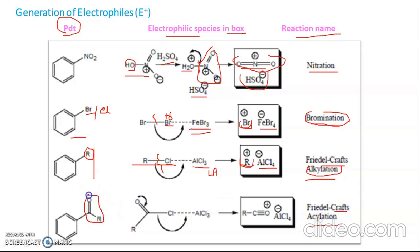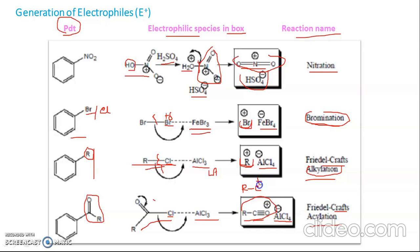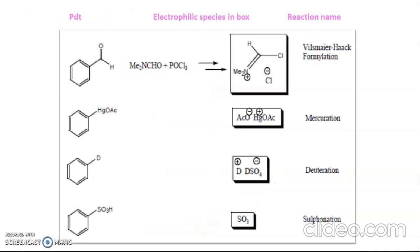In Friedel-Crafts acylation, an acyl group is attached to the product. We again use a Lewis acid, but instead of alkyl halide we use an acyl halide. The Cl is removed to form AlCl4-, and the actual electrophile is RCO+. Another resonance structure is also possible where the positive charge is over carbon and oxygen is neutral.